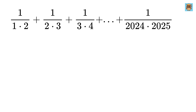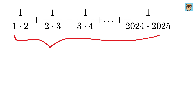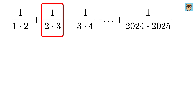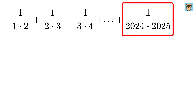Today we have an interesting olympiad style problem. We are asked to find the value of a sum that contains 2024 terms. The first fraction has 1 over 1 times 2, the second has 1 over 2 times 3, and so on all the way up to 1 over 2024 times 2025.